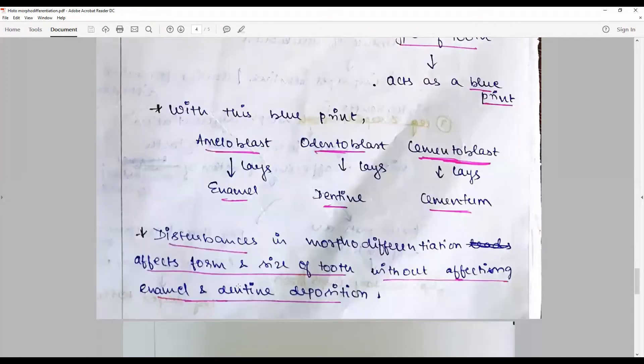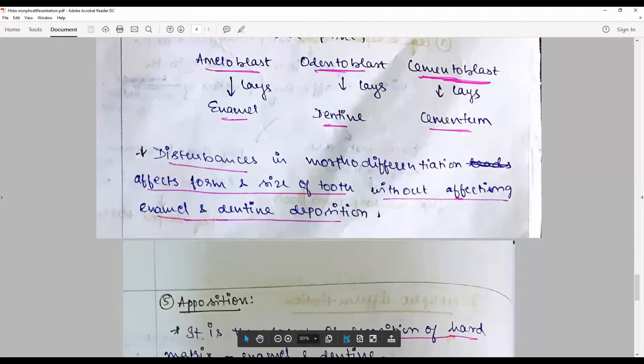Disturbance in morpho-differentiation affects the form and size of tooth without affecting the enamel, meaning it becomes haphazard. The size and shape become abnormal, but the quality is not compromised.